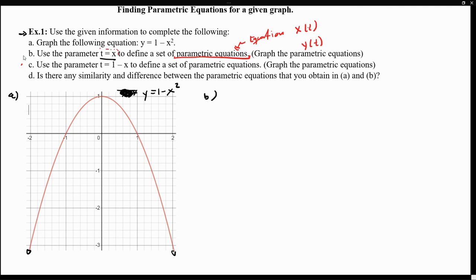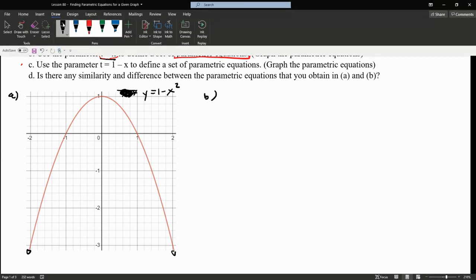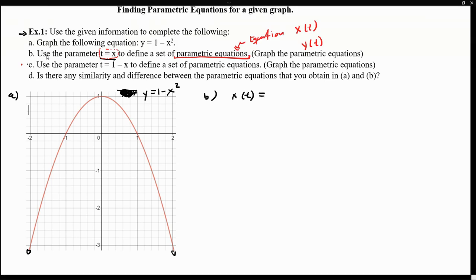If we set the parameter x to be equivalent to t, then x of t is just t, because for every x there is a t. So x of t equals t — that is our first parametric equation. Now the question becomes: how can we come up with a parametric equation for y? We can find an equation for y in terms of t using the curve we want to represent, and substitute x with our parameter t.